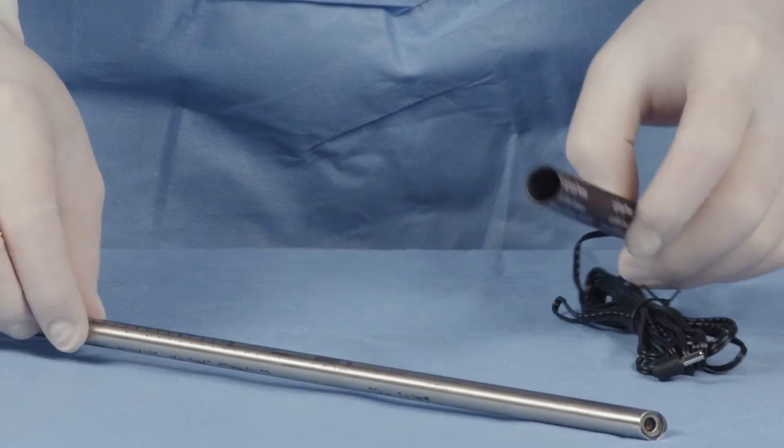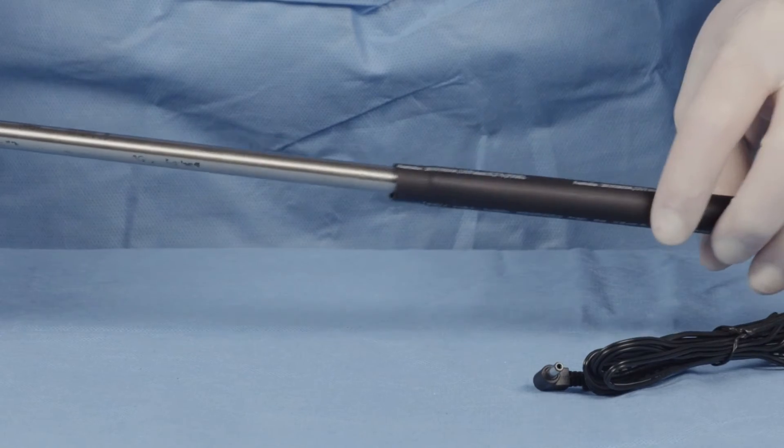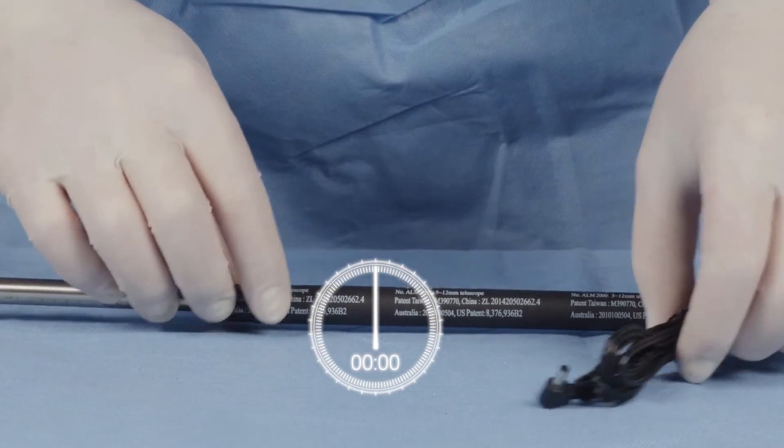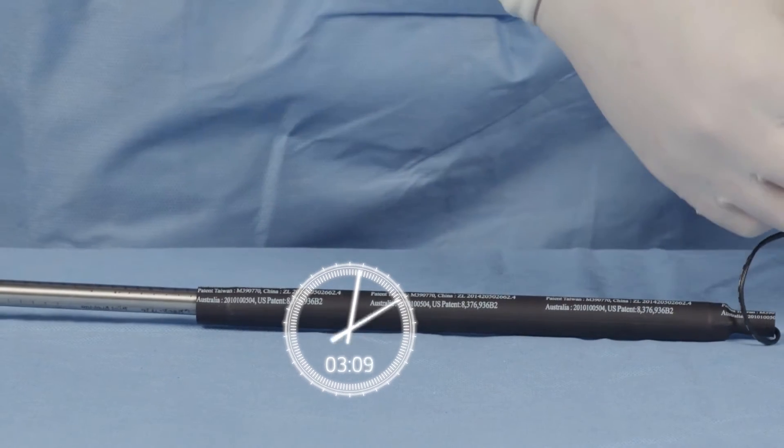This is achieved by warming the scopes to optimum temperature within a sterile warming sleeve, providing long-lasting fog prevention. The scope will warm to the correct temperature in 5 minutes.